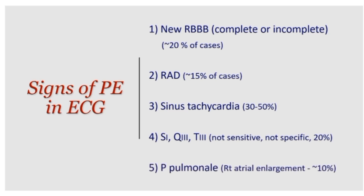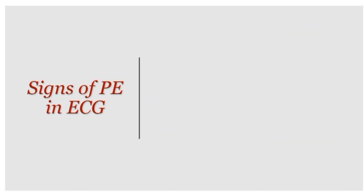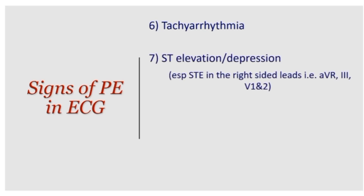Peaked P waves are a sign of right atrial enlargement and are seen in about 10% of PE cases. We also talked last week about tachyarrhythmias that can happen with PE, and about ST elevation and depression — particularly ST elevation in AVR, lead 3, V1, and V2. We covered all of this last week.